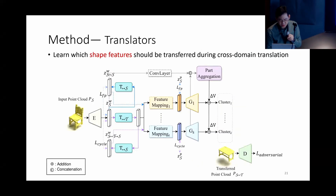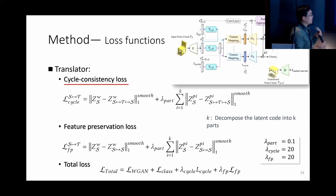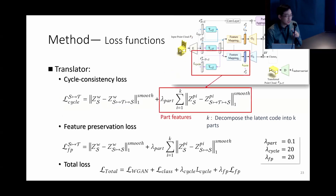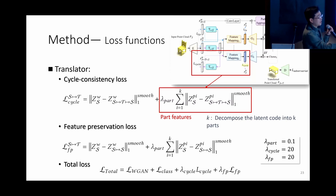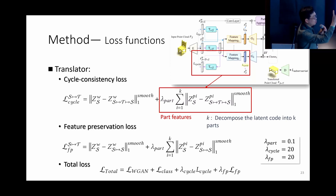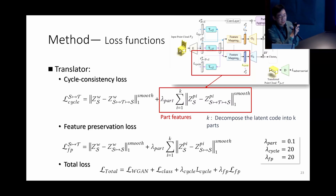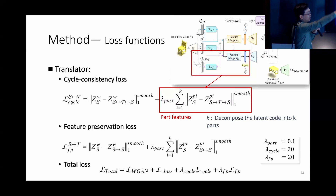We combine global features and part features together to make learning more efficient. We use three datasets: chair-and-table (main category in ShapeNet), arm-to-armless, and tall-to-short table. Training takes about 30 hours for each pair like table-to-chair on an NVIDIA 1390 graphics card, but inference runs at interactive rates.